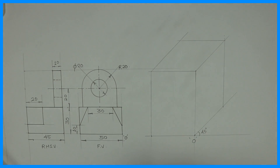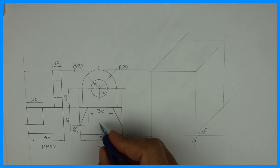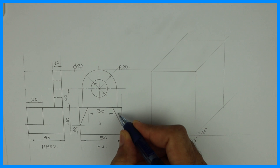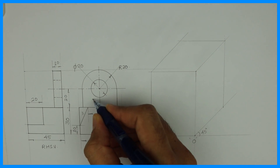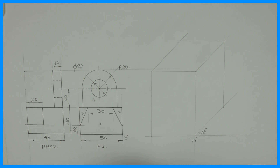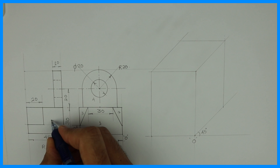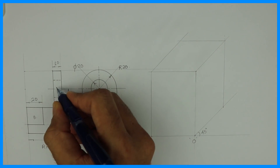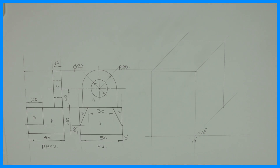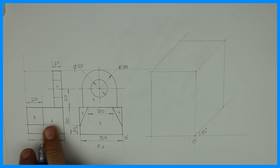Now if you see the front view, we have 1, 2, 3, 4 — that is 4 parts. For the side view: A, B, C — that is 3 parts. So we will start with the side view and draw part A.